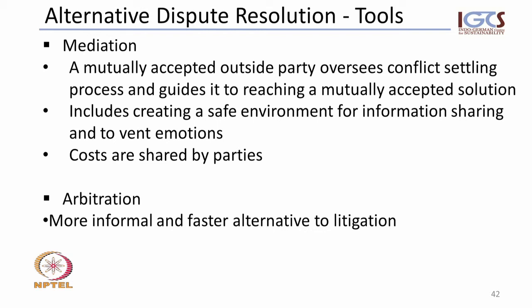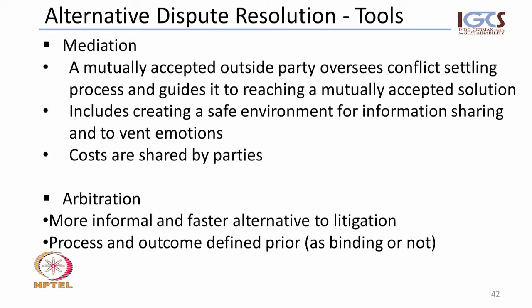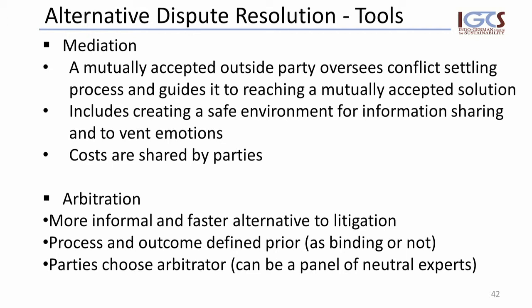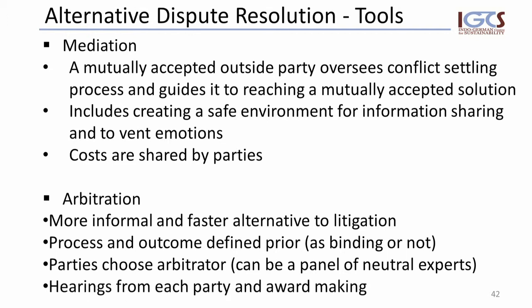Arbitration is informal and faster than litigation, usually less time-intensive and expensive. The process and outcome must be defined prior to going into arbitration, and those outcomes could be defined as binding or left open — this is agreed upon beforehand. The parties choose an arbitrator, which can be a panel of neutral experts or a respected elder trusted by both sides as knowledgeable about the case. There are then hearings from each party and finally an award is made.